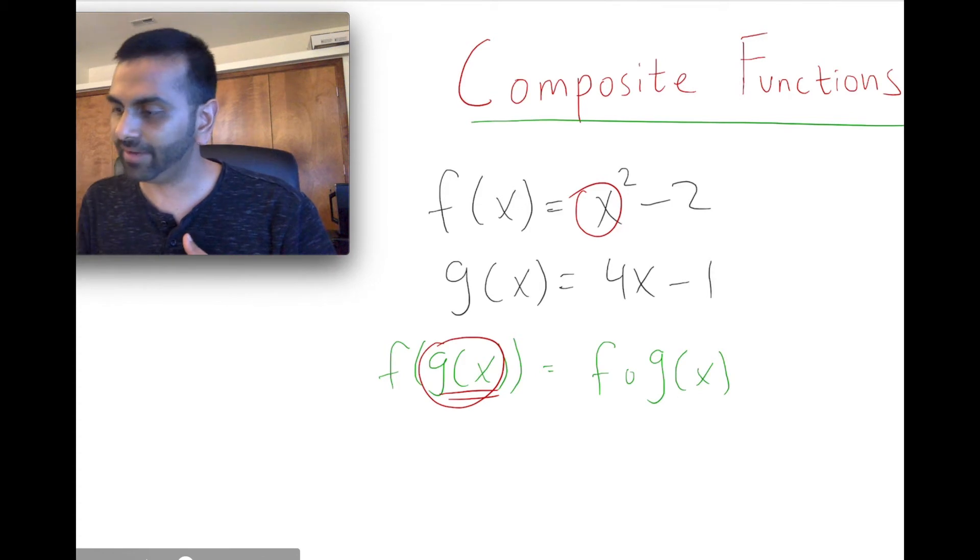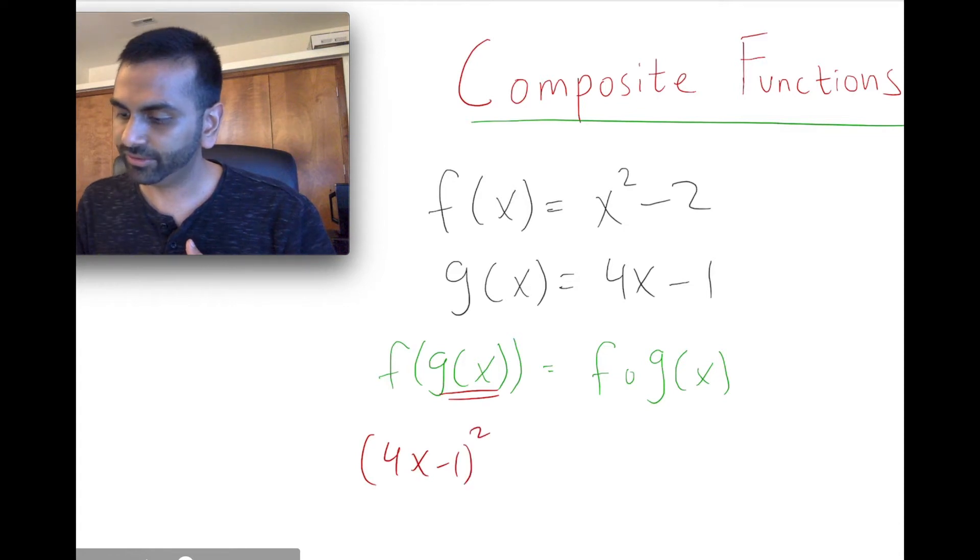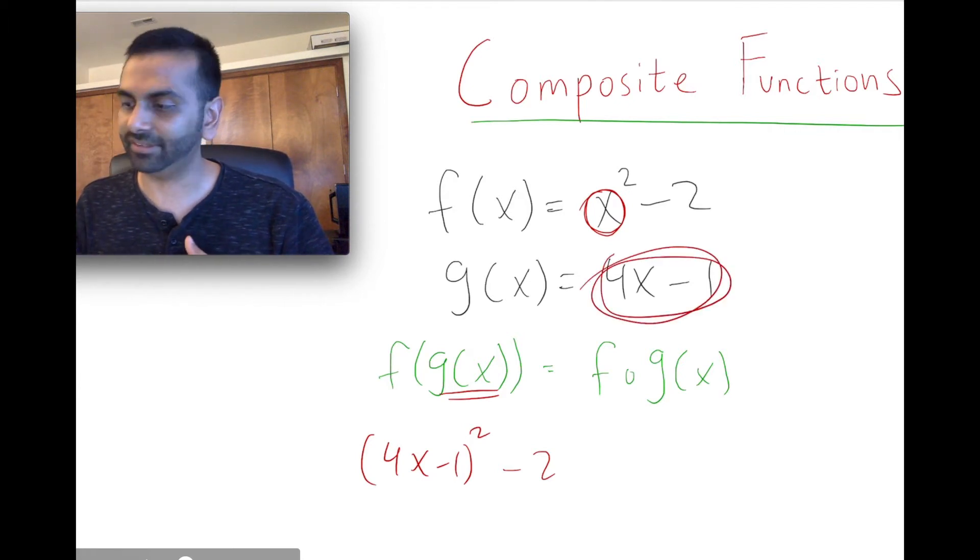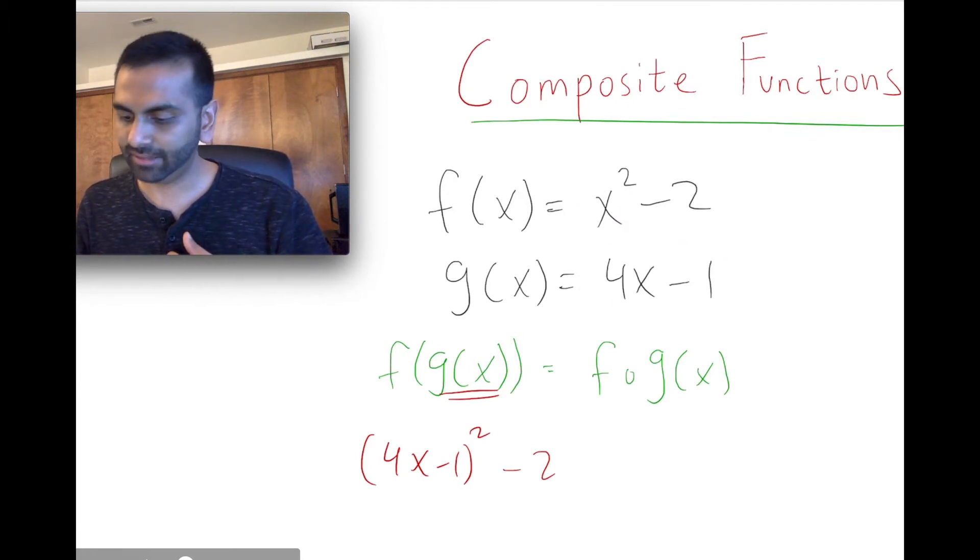So f of g of x is simply going to be whatever g of x was, 4x minus 1 squared minus 2. So all we did is we replaced this x with what g of x is.